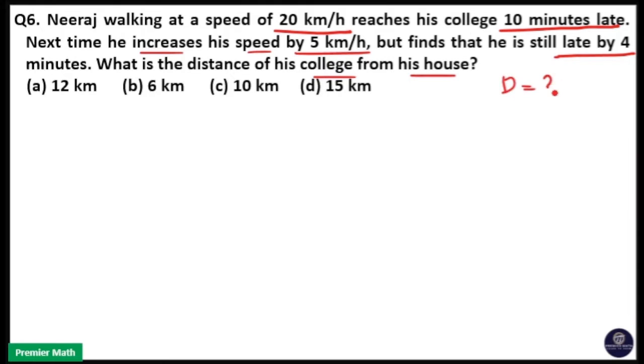We have to find out the distance between college and house. The distance is constant because first time he walked 20 km per hour, second time he walked 25 km per hour. He is walking to his college from his house, so distance is common here. We have to find out speed ratio and time ratio.